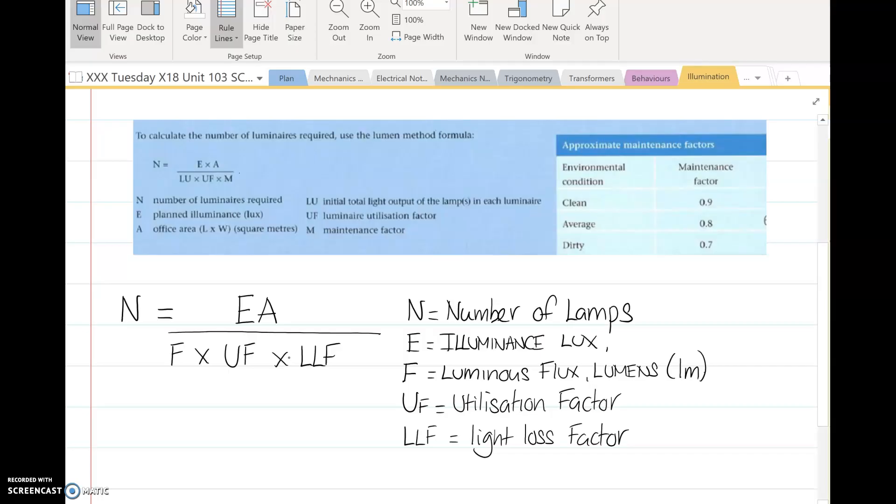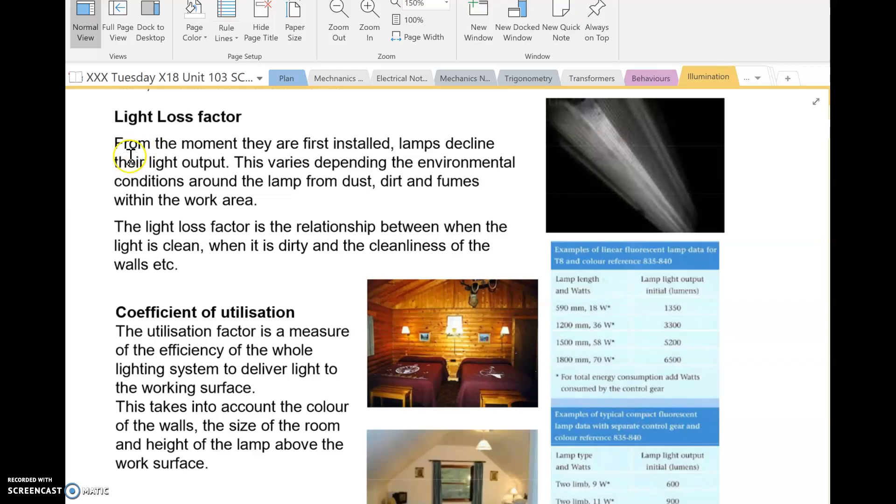So let me explain what these two are. Light loss factor: from the moment the light installation is put into service, the lights start to get dusty, the lamp performance deteriorates, so over a period of time the light output will be reduced. For that reason we put that factor into our calculation.